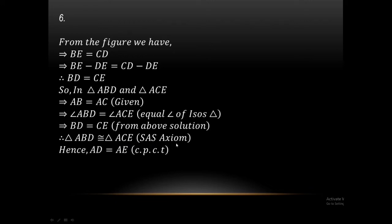We have AC. By SAS axiom, triangle ABD is congruent to triangle ACE. Therefore, corresponding parts of congruent triangles — CPCT.